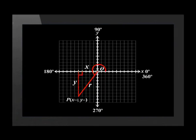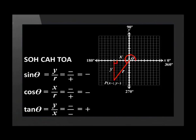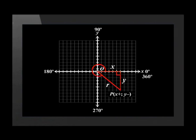Both X and Y have negative values in quadrant 3. The triangle is completed by drawing a line perpendicular to the x-axis, and theta falls between 0 degrees and line R, which has a positive value. Because X and Y are both negative, sine and cos will both have negative values. Tan will be equal to a negative value divided by a negative value, which gives a positive answer. This means that tan is the only positive ratio in the third quadrant.